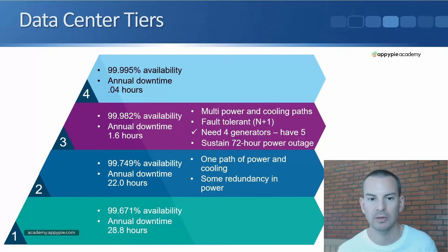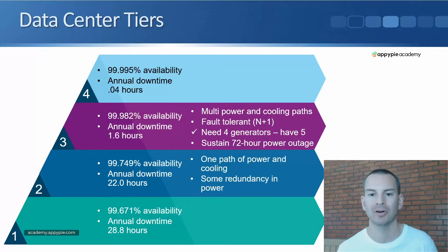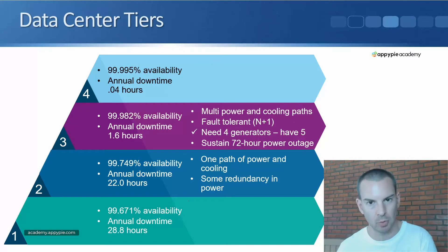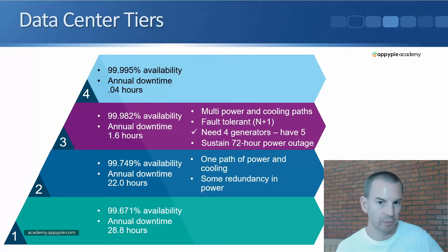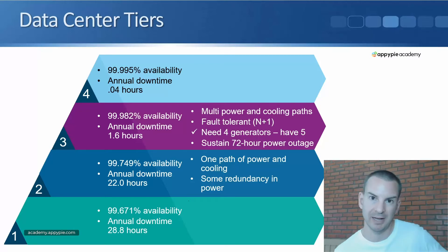Moving up, a tier three data center has an annual downtime of only 1.6 hours. It is required to have multiple power and cooling paths and needs to support N+1 fault tolerance. N+1 means, for example, if you required four generators to supply the required power, you would put in five — you would put in a spare. With the power, it needs to be able to sustain a 72-hour power outage from the grid and still be able to provide backup power from generators.